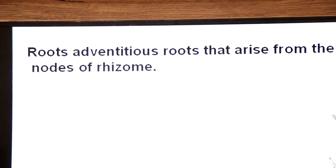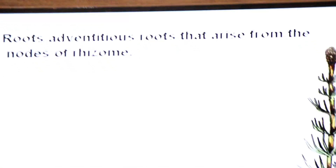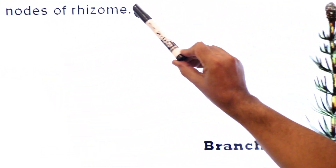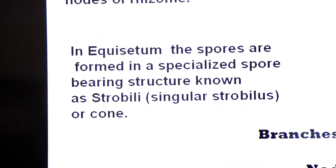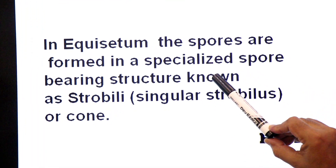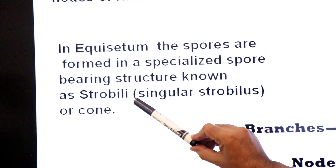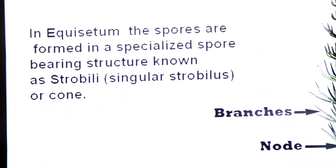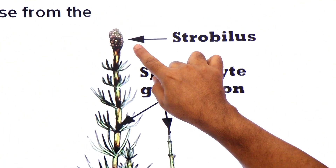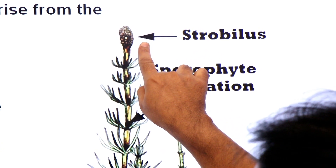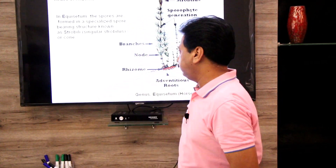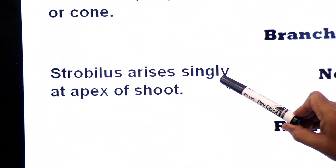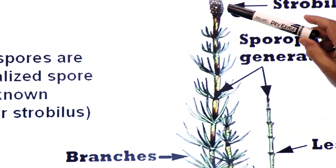The roots of Equisetum are adventitious roots that arise from the nodes of the rhizome. In Equisetum, spores are formed in a specialized spore-bearing structure known as a strobilus (plural: strobili), also called a cone. The strobilus arises at the apex of the shoot. This plant is a homosporous plant, producing spores of the same type.